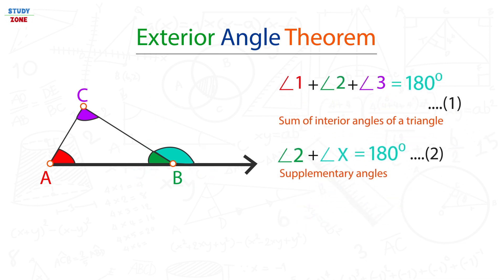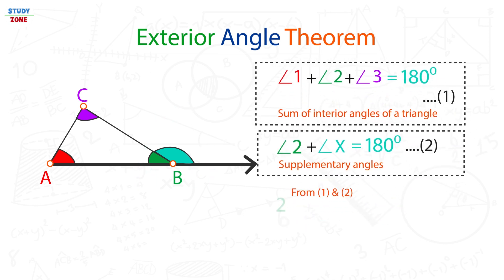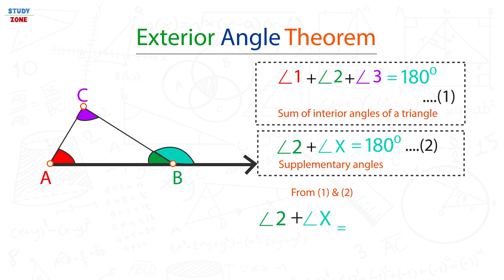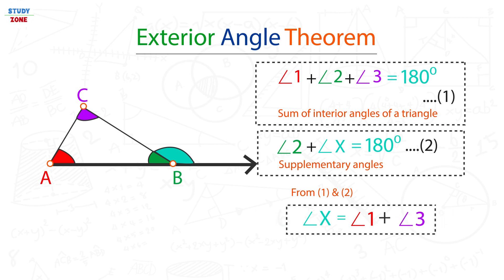From equation 1 and 2, we can say that angle 2 plus angle X is equal to angle 1 plus angle 2 plus angle 3. We can remove angle 2 from both sides, which implies angle X is equal to angle 1 plus angle 3. Hence proved the exterior angle theorem.